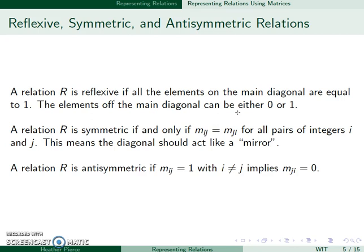And it's antisymmetric if MIJ equals 1 with I not equal to J implies MJI equals 0. So basically, once again, if I treat the diagonal kind of like a mirror, at least one of the matching entries needs to be a 0.